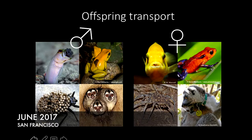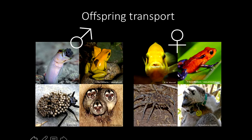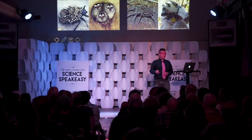An example of such a behavior could be offspring transport — something that either males or females could do, or both equally. In jawfish, black-legged poison dart frogs, giant water bugs, and owl monkeys, this is almost exclusively the job of the male. In cichlid fish, strawberry poison dart frogs, wolf spiders, and ringtail lemurs, it is done exclusively by the female. So in some species it's a male-type behavior, and in others it's a female-type behavior.